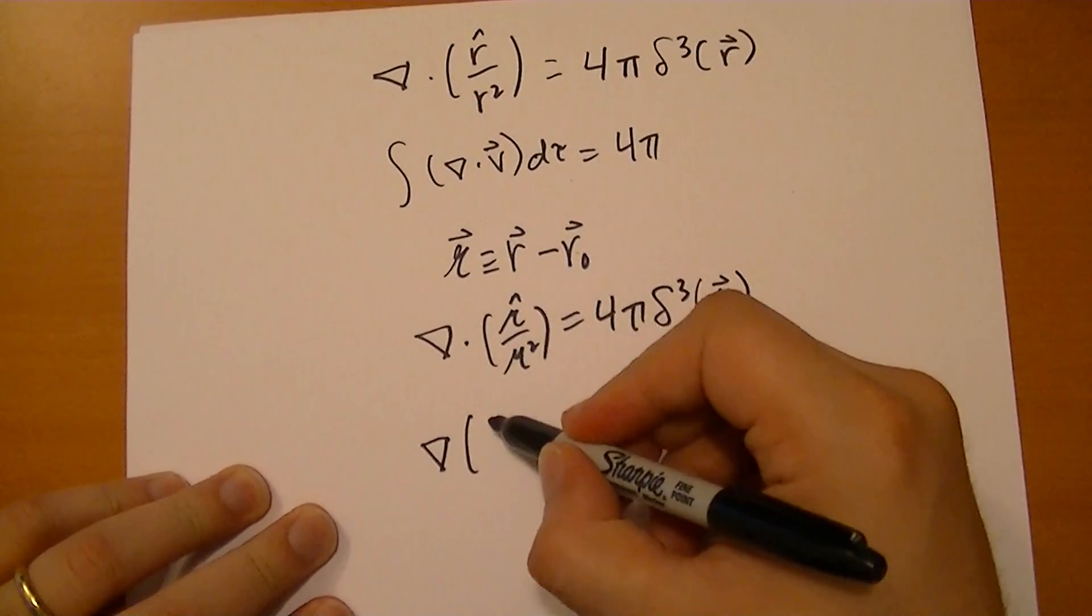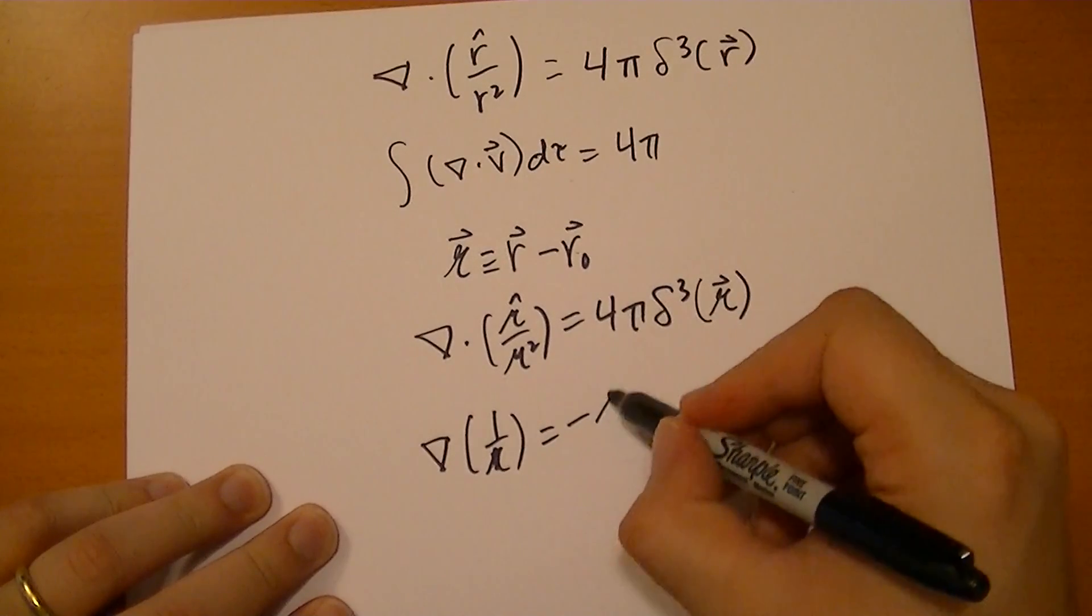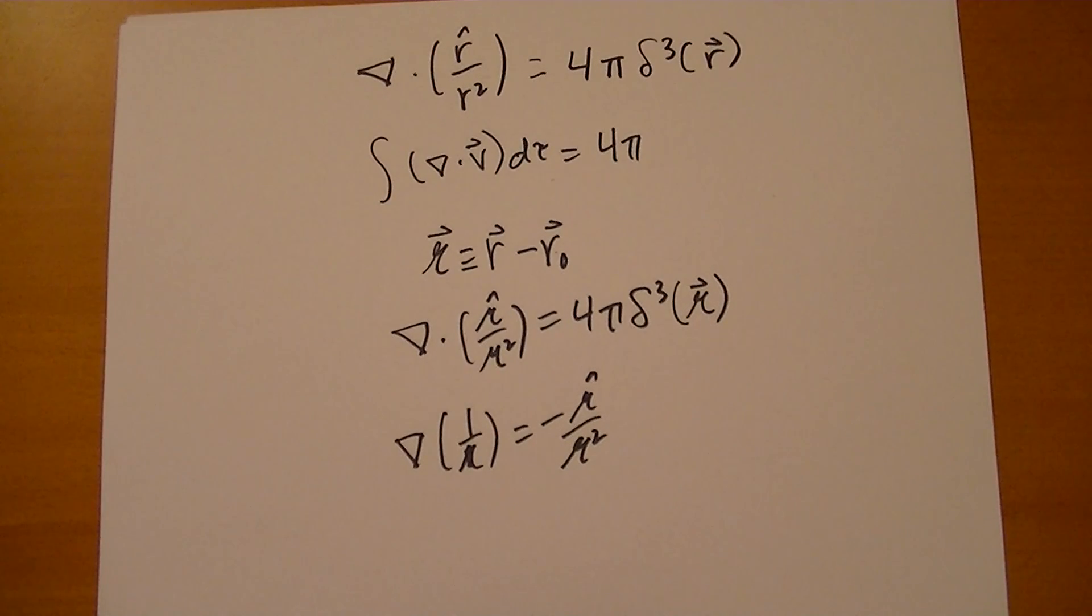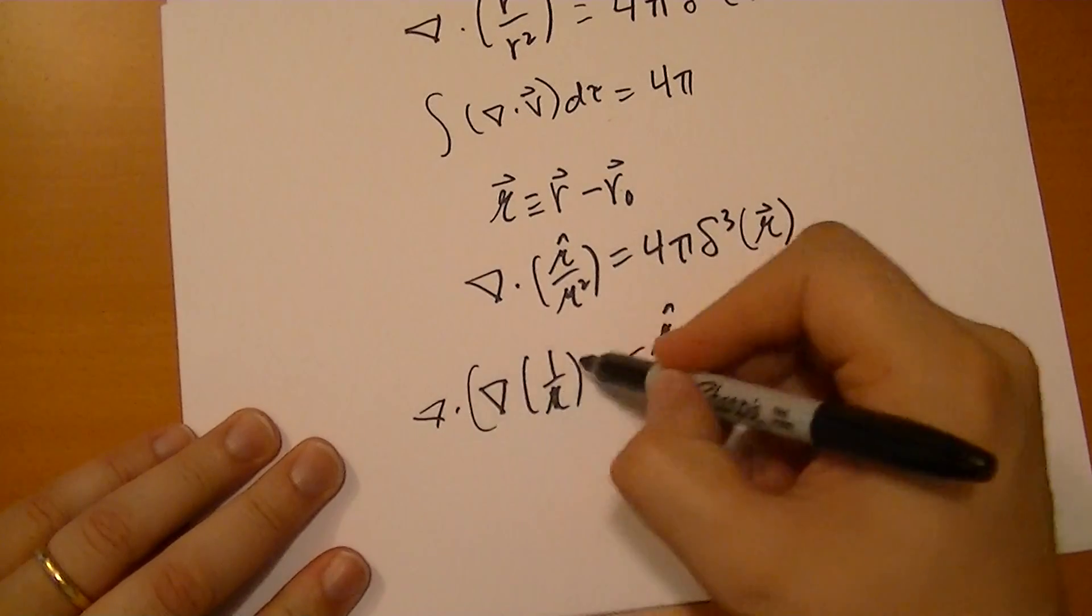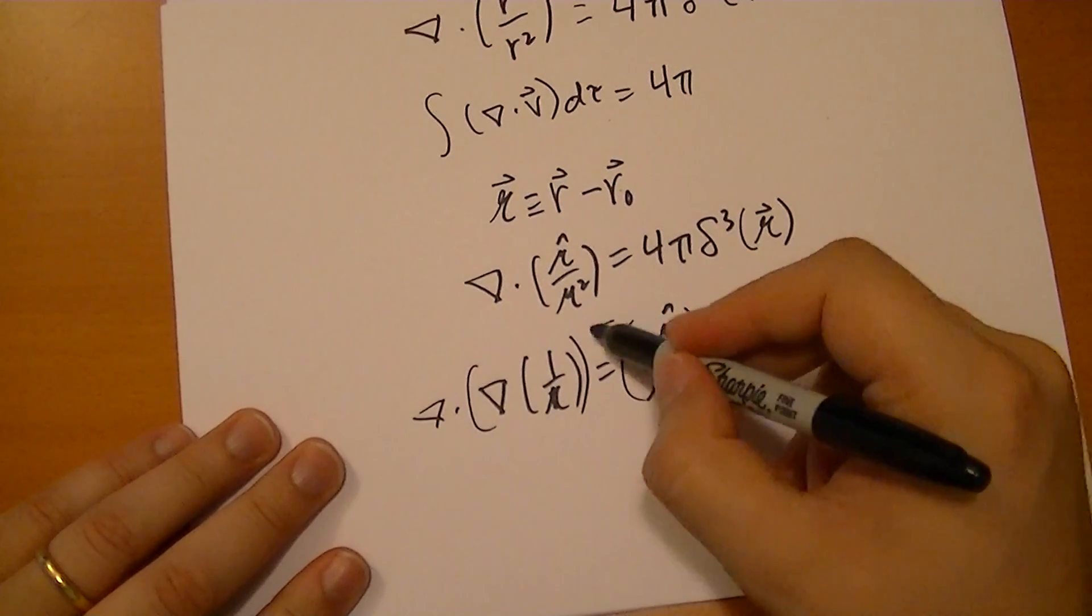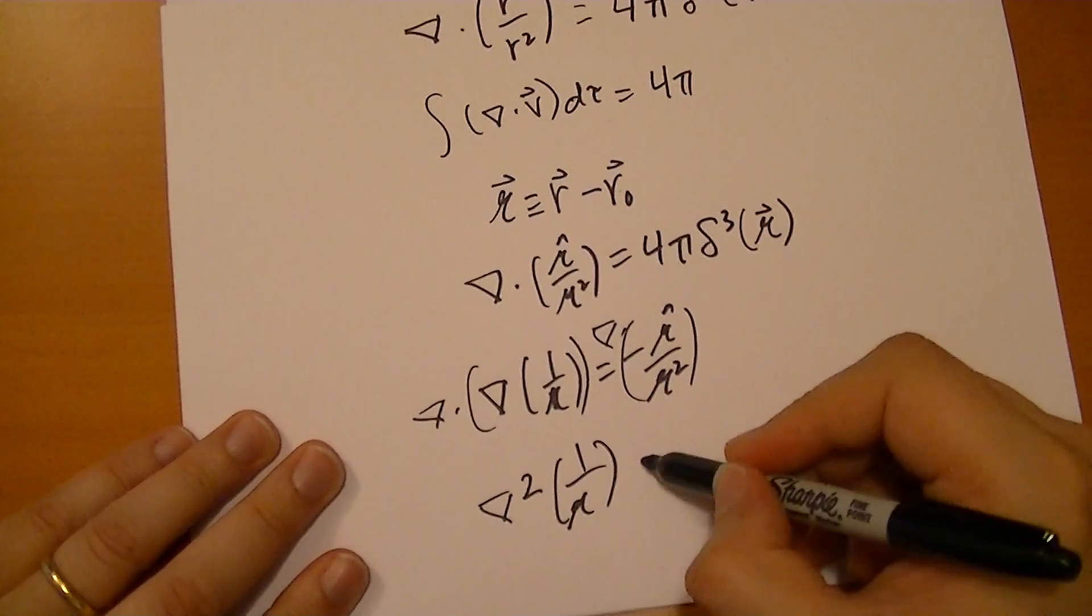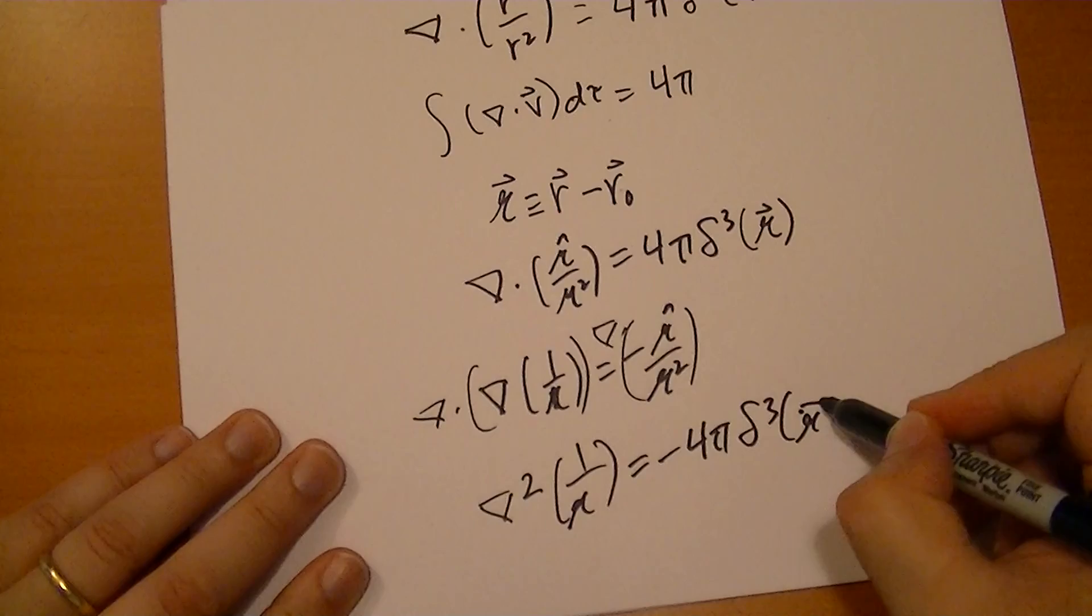Since the gradient of this is equal to that, and if you've been solving the problems earlier, Problem 1.13, you'll realize that gradients are actually quite easy to calculate in that regard. The conclusion is that if you take the divergence of the gradient, then you find that the Laplacian of 1/r is equal to minus 4π δ³(r).